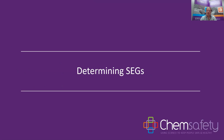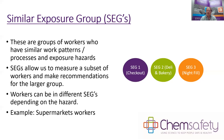One of the main things we gather all this information for is to determine similar exposure groups, or SEGs. These are groups of workers who have similar work patterns, processes, and exposure hazards. This allows us to measure a subset of workers and make recommendations for the larger group, because exposure monitoring is expensive and we want to be as cost-effective as possible. Rather than monitoring everyone, we can monitor a smaller group and make recommendations for the whole.